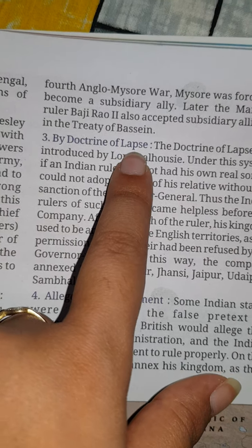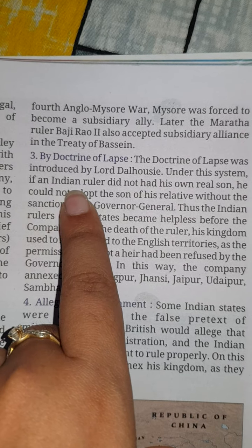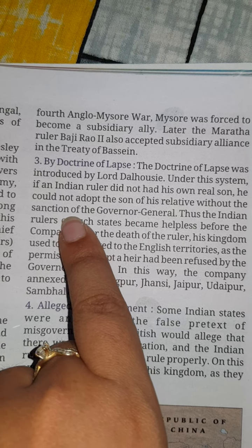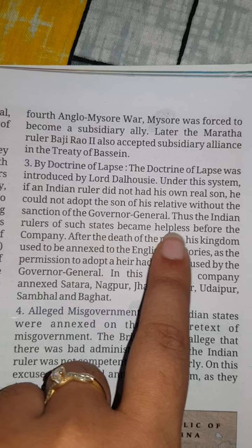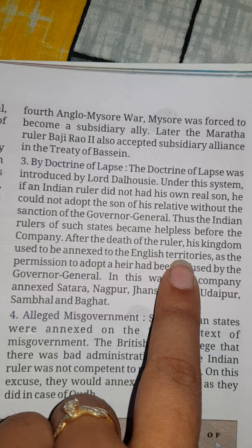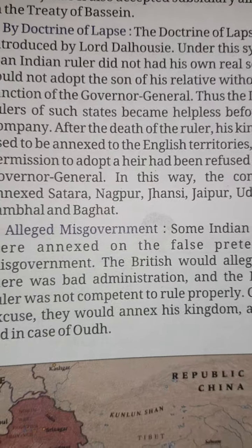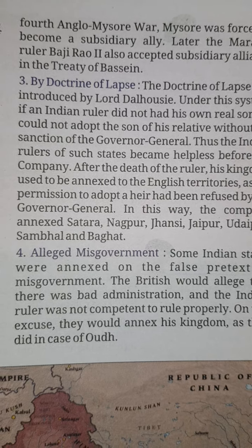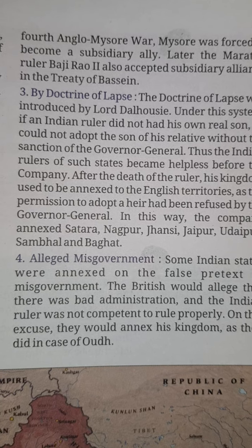Third method: by Doctrine of Lapse, introduced by Lord Dalhousie. Under this system, if an Indian ruler did not have his own real son, he could not adopt a son from his relatives without the sanction of the Governor-General. Thus the Indian ruler became helpless before the company, and after the ruler's death, his kingdom was annexed to the English territories.